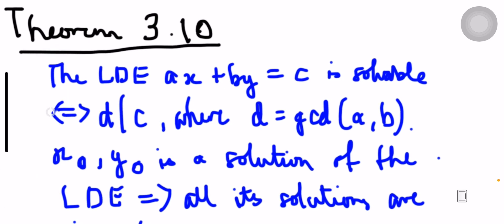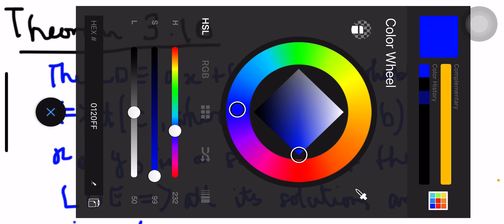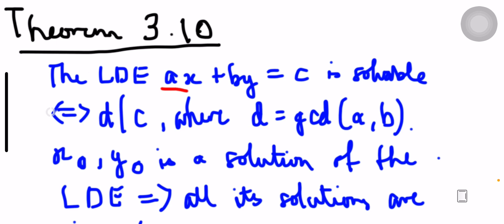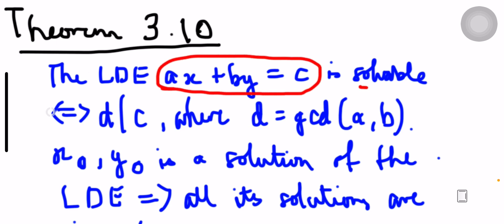So Theorem 3.10 — in some books it may be called a different name, but in our book we'll call it Theorem 3.10. The LDE Ax plus By equals C is said to be solvable if and only if you have a certain D which is a factor of C, meaning D divides C, where D is defined as the greatest common divisor of the two coefficients A and B. Whatever the GCD of your coefficients is, make sure it is a factor of your right-hand side C, and then the equation is solvable — and it is a Diophantine equation.